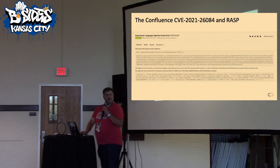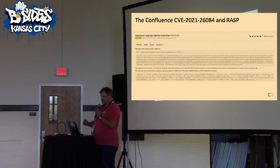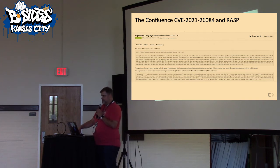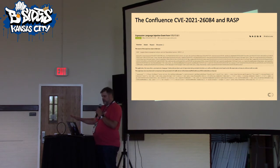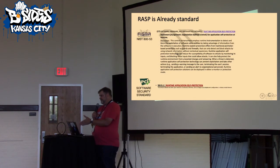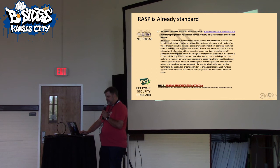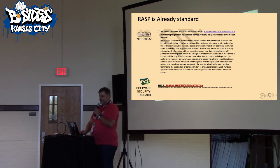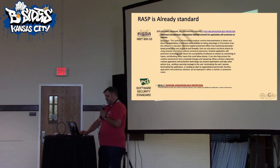So what does it look like in practice? Let's go back to Confluence. That Confluence CVE — the attackers had to bypass the WAF. But the same payload was just picked up by a RASP, easy peasy. No configuration needed. So even though they bypassed the WAF, the RASP caught it. RASP is already a standard, whether most of you know it or not — it's in NIST 853, and it's also in the most recent PCI DSS.